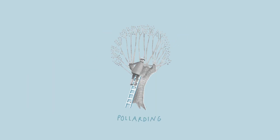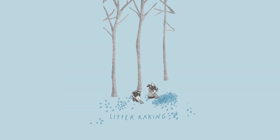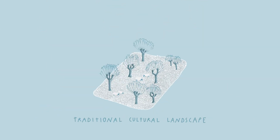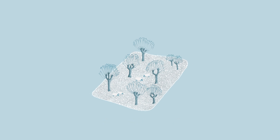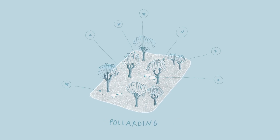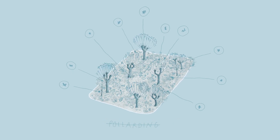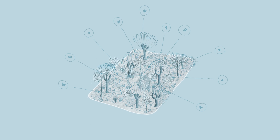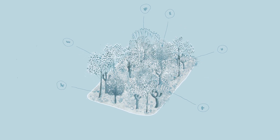On the other hand, as seen with practices such as pollarding, coppicing, and litter raking, some traditional cultural landscapes already host a large number of species. Abandoning these areas can therefore have more complicated outcomes, sometimes even negative for biodiversity.